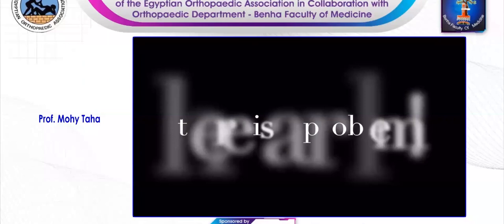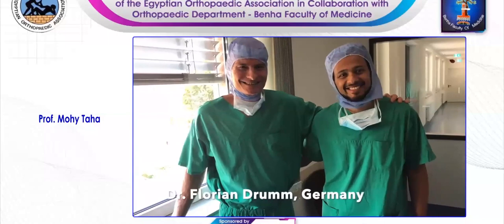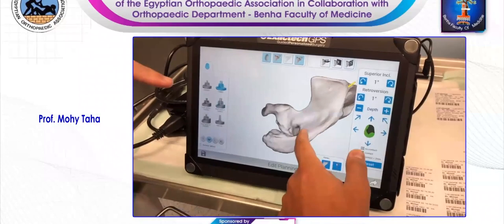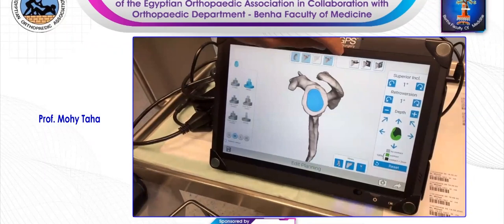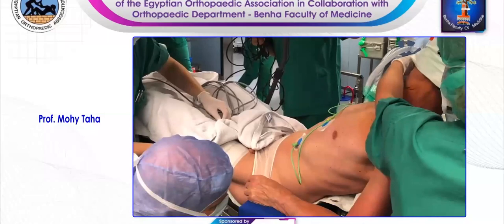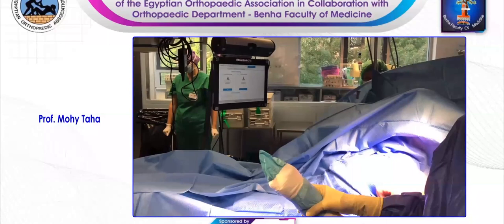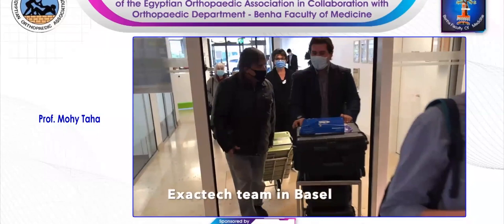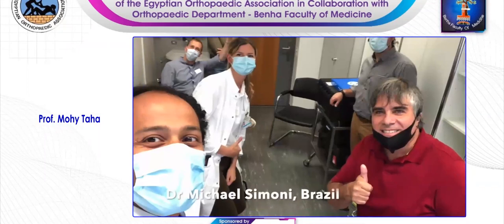Now you see there is a big bony defect, so I thought to solve this problem I could use navigation. So I went and visited Dr. Drom in Germany, who introduced me to the system, how to plan the 3D planning using the Exatec software, and he showed me two cases he'd done that day. The installation is simple by fixing a bar to the operating table and then covering the GPS with sterile drapes. After that, I decided to try this system in our case and the Exatec team came over to give a workshop to our crew.